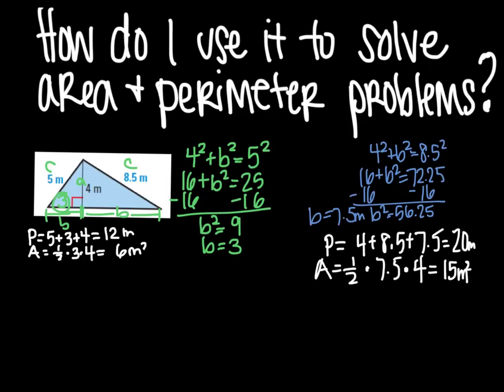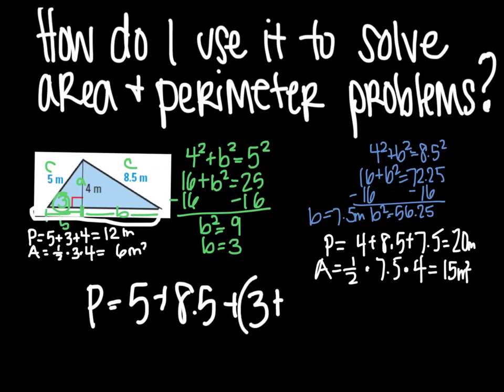And then finally you can take that to find the area and perimeter of the entire thing. So your perimeter would be 5 plus the 8.5, and then to be the whole length here it would be both B's combined. So you take that 3 plus your 7 and a half to find your perimeter.